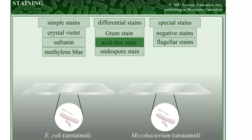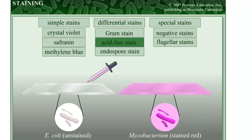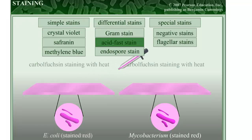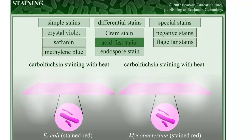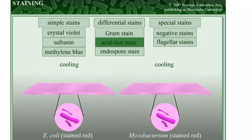The acid-fast stain is a useful differential stain, because it only interacts strongly with a subset of bacteria in the genus Mycobacterium that have a waxy material in their cell walls, as well as the pathogenic strains of the genus Nocardia. The acid-fast staining method involves several steps, during which the samples are stained with carbol fuchsin while being heated over steam, cooled, decolorized with hydrochloric acid, and counterstained with a simple dye such as methylene blue.